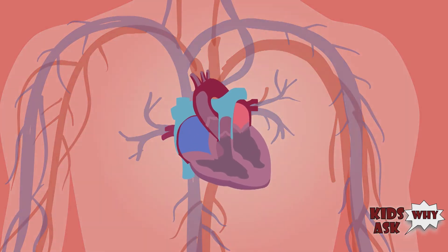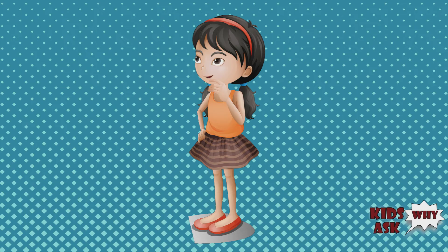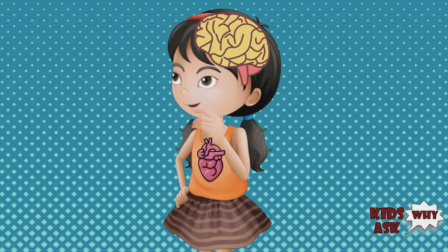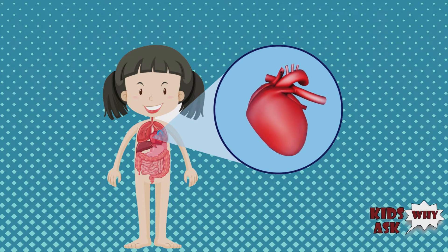These movements are called involuntary, which means you don't actually have to think about making your heartbeat. Your brain does the work for you and passes on the message. The heart is located between the lungs in the middle compartment of the chest.